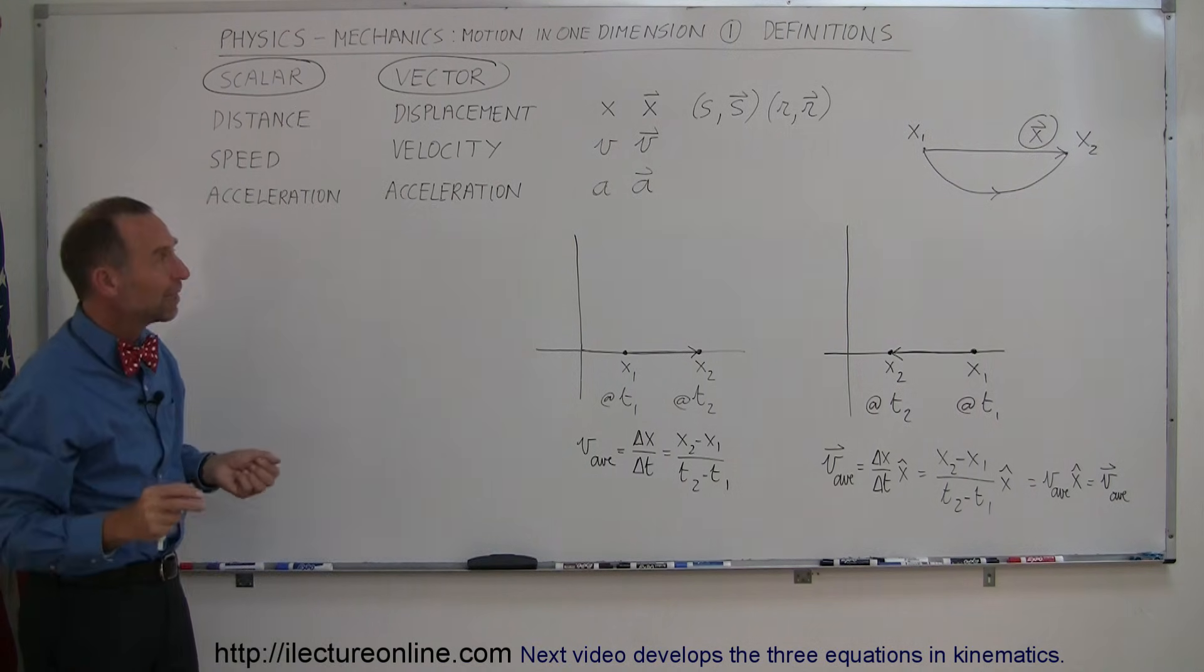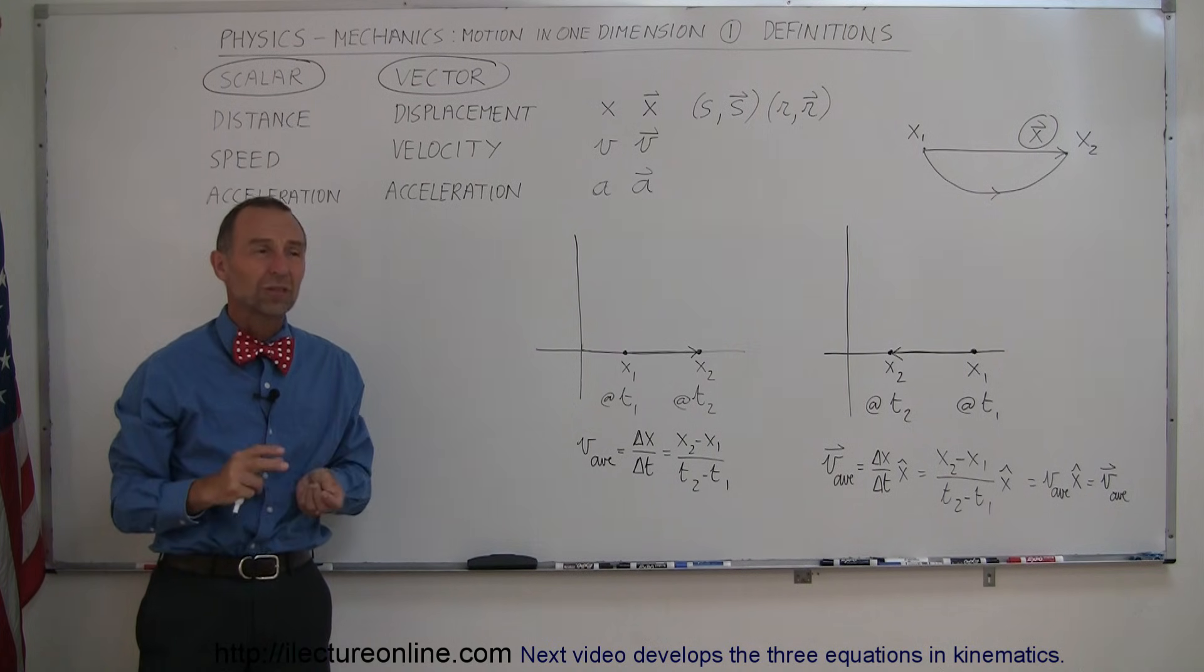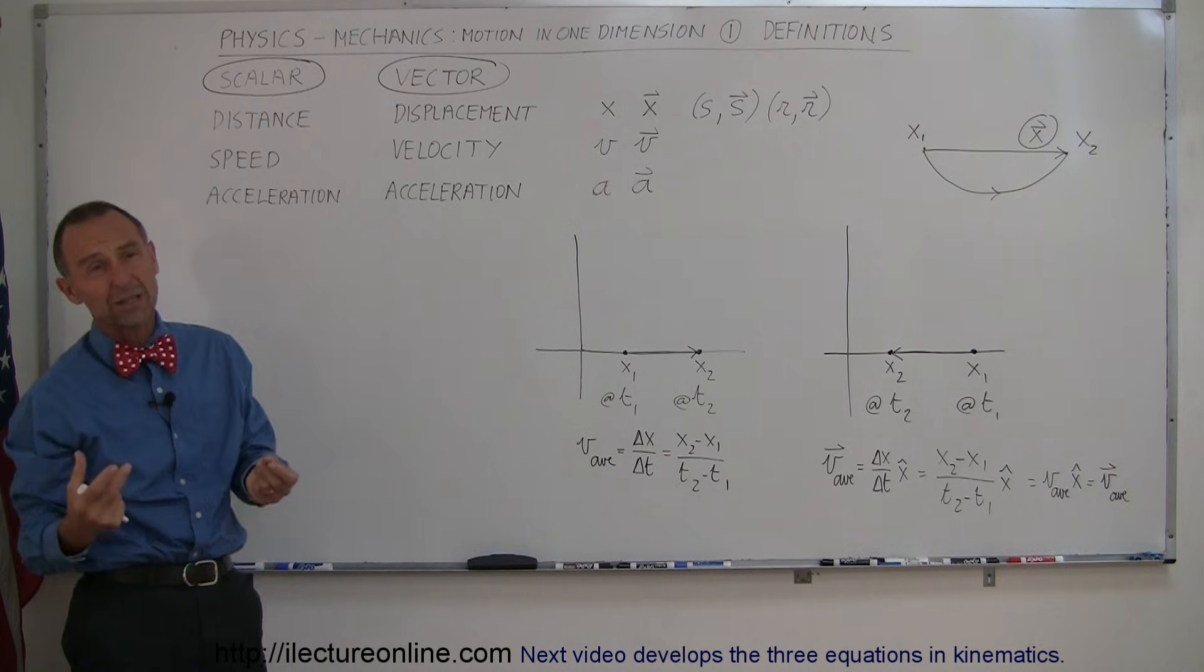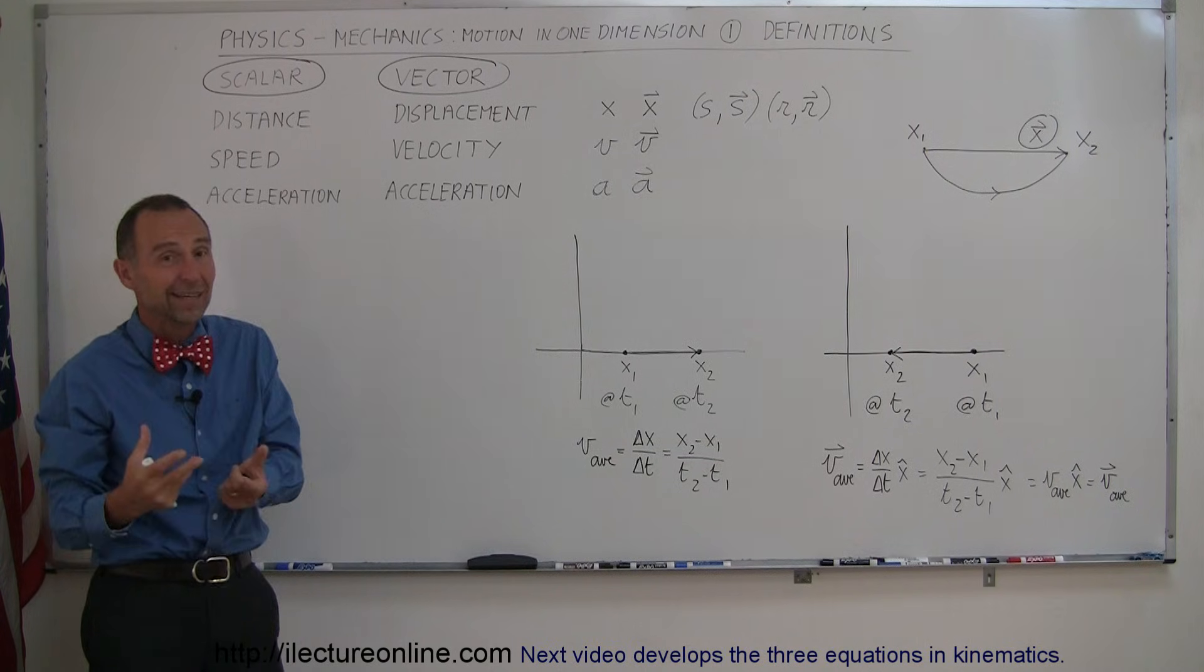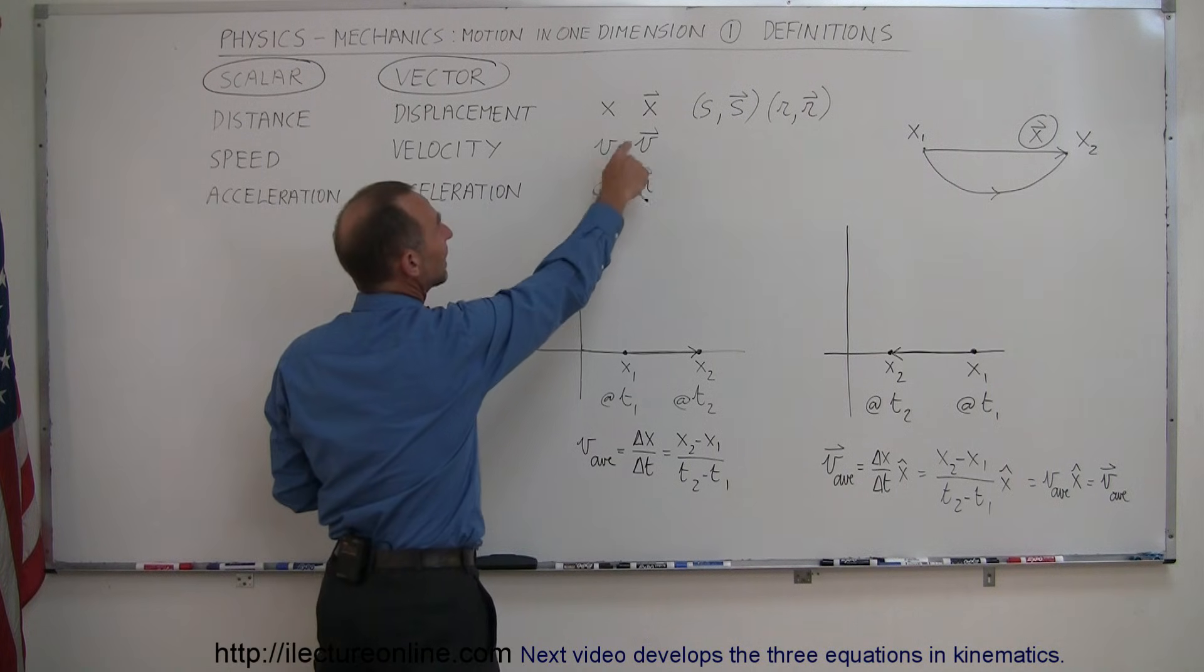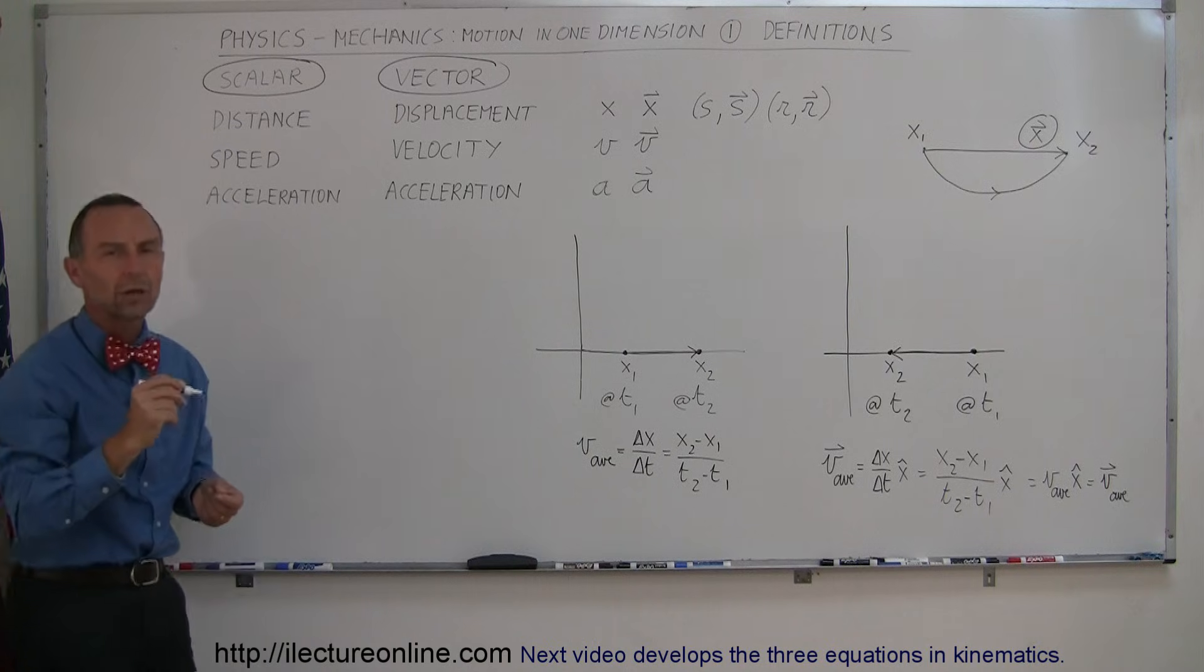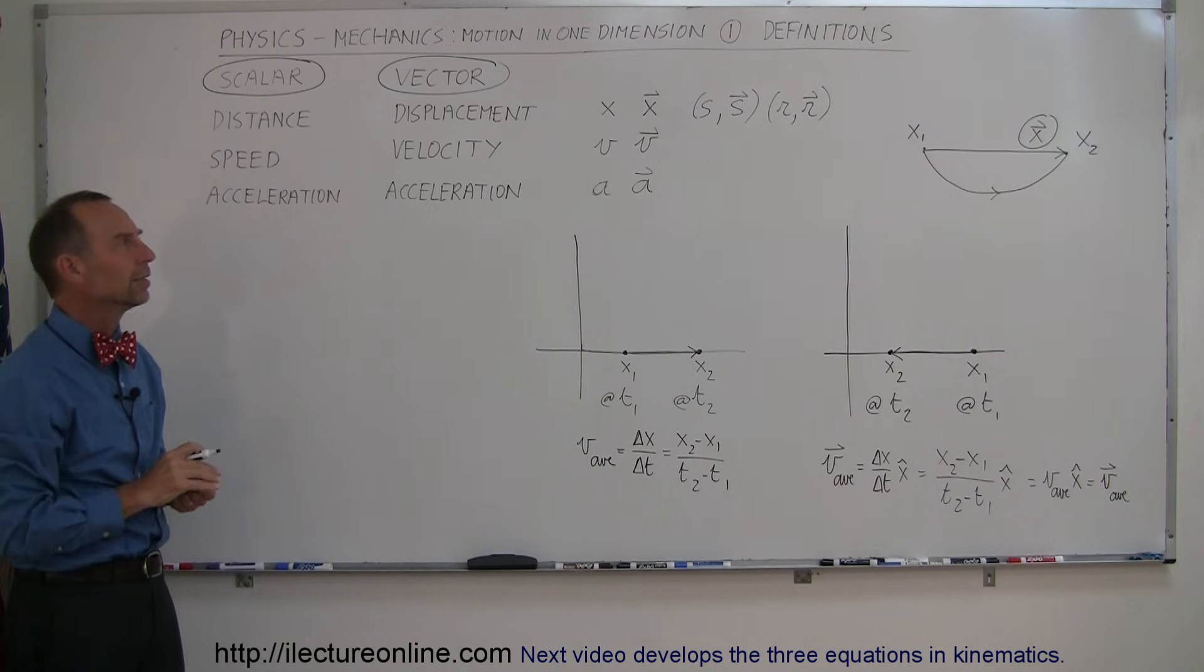Now, quite often, in classrooms and in textbooks, they will use the term velocity interchangeably. So they'll say velocity when they mean speed. They say velocity when they mean velocity. And sometimes it's hard to tell the difference. You usually can tell the difference by the characterization, by the little arrow on top. Or sometimes in a book, they use a bold-faced letter, a thick letter that indicates that it's a vector quantity.